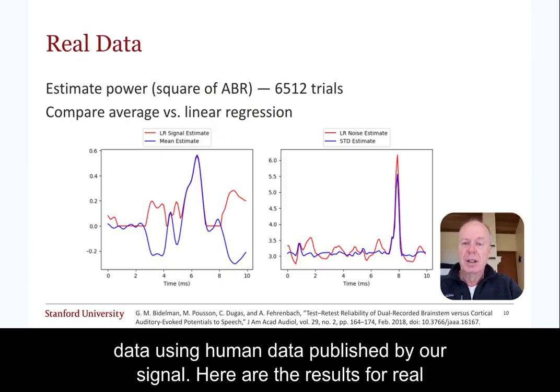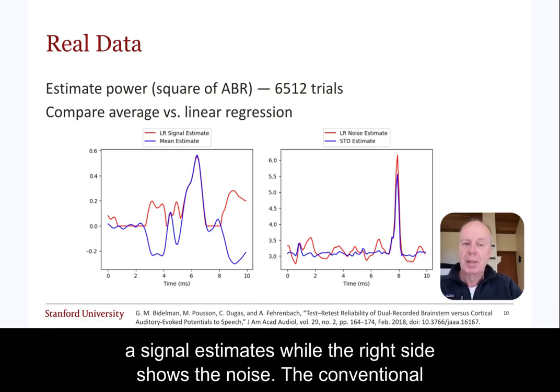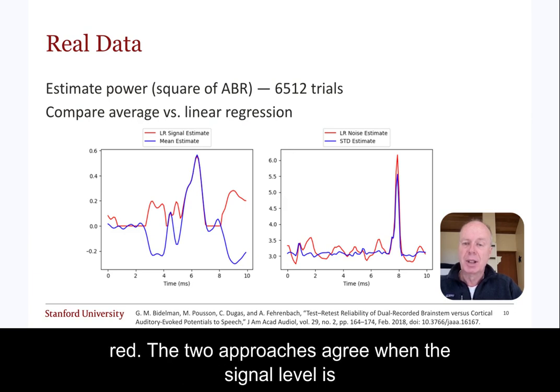Here are the results for real data using human data published by our co-author Gavin Bidelman. The left plot shows the signal estimates, while the right side shows the noise. The conventional approach using averages in blue, while the linear regression estimates are in red. The two approaches agree when the signal level is high.